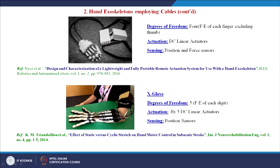The exoskeleton proposed by Nyx et al. has 4 degrees of freedom, actuating the four fingers — index, middle, ring, and pinky — for natural flexion-extension of each finger, excluding the thumb. Actuation is done by DC linear actuators, and sensing uses position and force sensors. This exoskeleton also sits close to the hand, behaving like a second skin to the user.